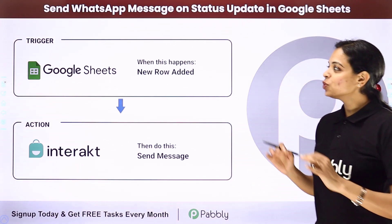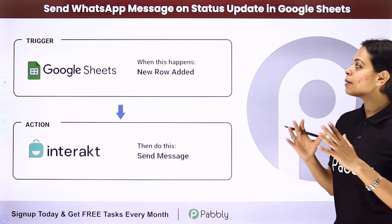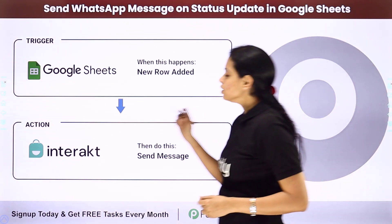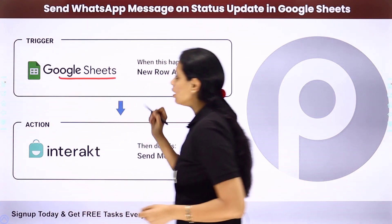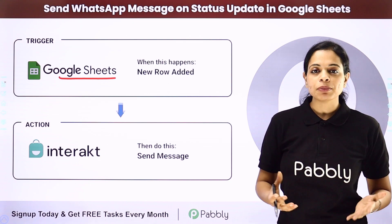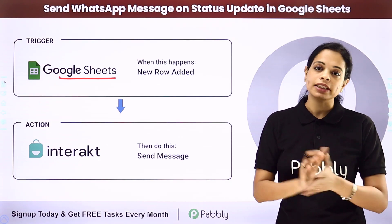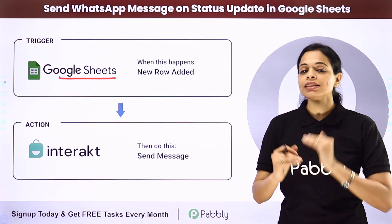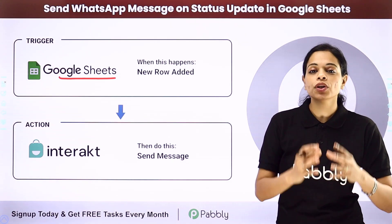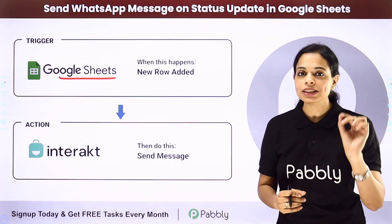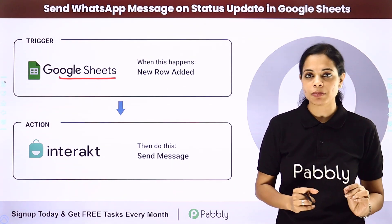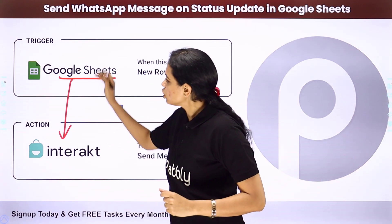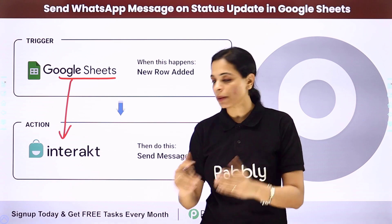In this video we are going to see how to send WhatsApp messages on status update in Google Sheet. So let's say that in your spreadsheet you have got certain data — for example, a visa status update. You have got the applicants, their details, and every time a status update happens, you want applicants to receive a WhatsApp message.